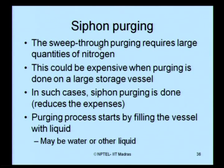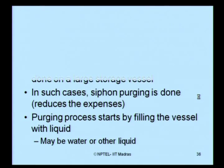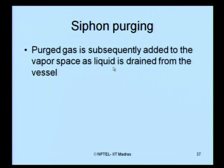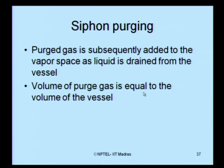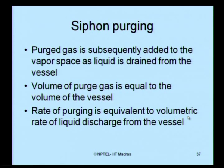For large storage vessels, siphon purging is used to reduce expenses. Siphon purging starts by filling the vessel with liquid — water or any other liquid. The purge gas is subsequently added to the vapor space as the liquid is drained off from the vessel. The volume of purge gas is exactly equal to the volume of the vessel, and the rate of purging equals the volumetric rate of liquid discharge. In the next class, we will discuss different methods where we can use flammability diagrams for explosion control models. Thank you.